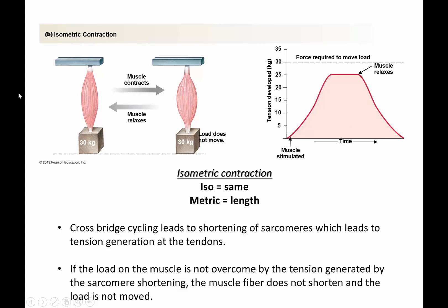In this case, we have a muscle attached to a 30 kilogram load. When the muscle is activated, it contracts and starts to build tension. We can look at the tension developed versus time and find that this muscle develops tension until it reaches its maximum tension level. Unfortunately, this is only 25 kilograms and the load is 30 kilograms, so the load cannot move. The muscle can generate its maximum tension for a period of time, and then once it relaxes it goes back to its prior state, but there's no movement — that has been an isometric contraction.